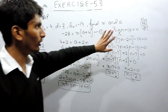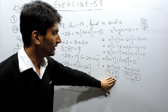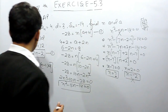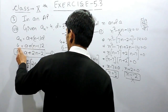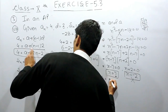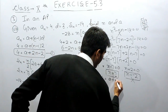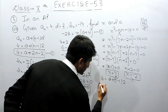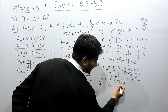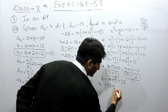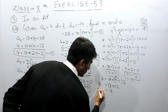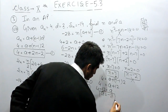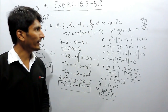Now we calculate the first term of this AP. Substituting n equals 7 into the first equation: 4 equals a plus 7 minus 1 into d, and d is 2. So 4 equals a plus 6 into 2, which gives 4 equals a plus 12. Therefore, a equals 4 minus 12, so the value of a is minus 8. The first term of this AP is minus 8.